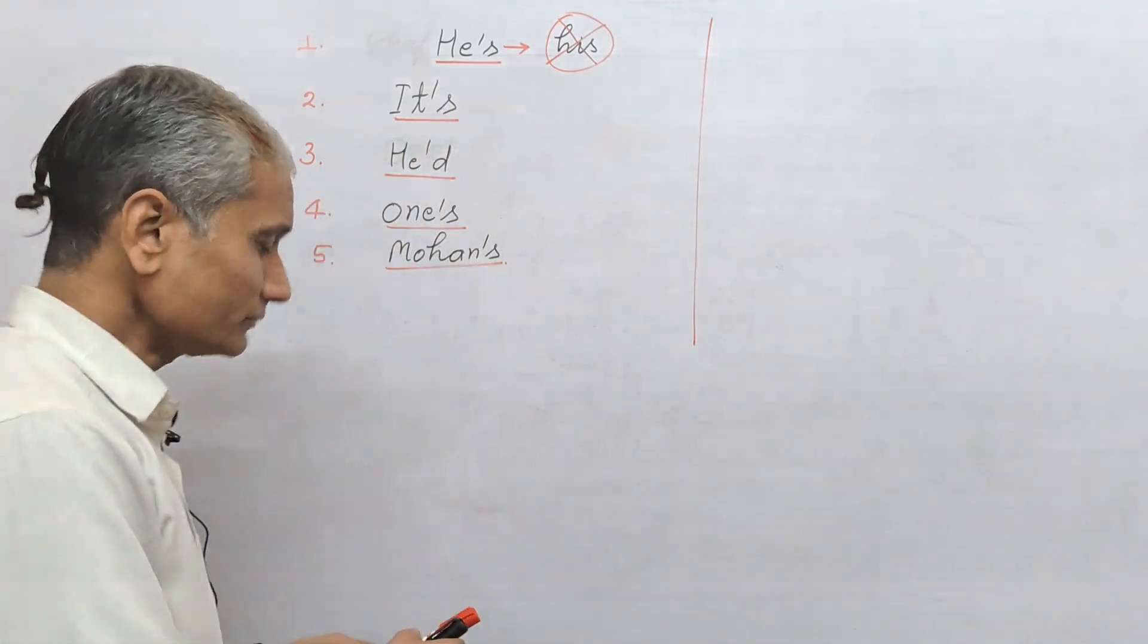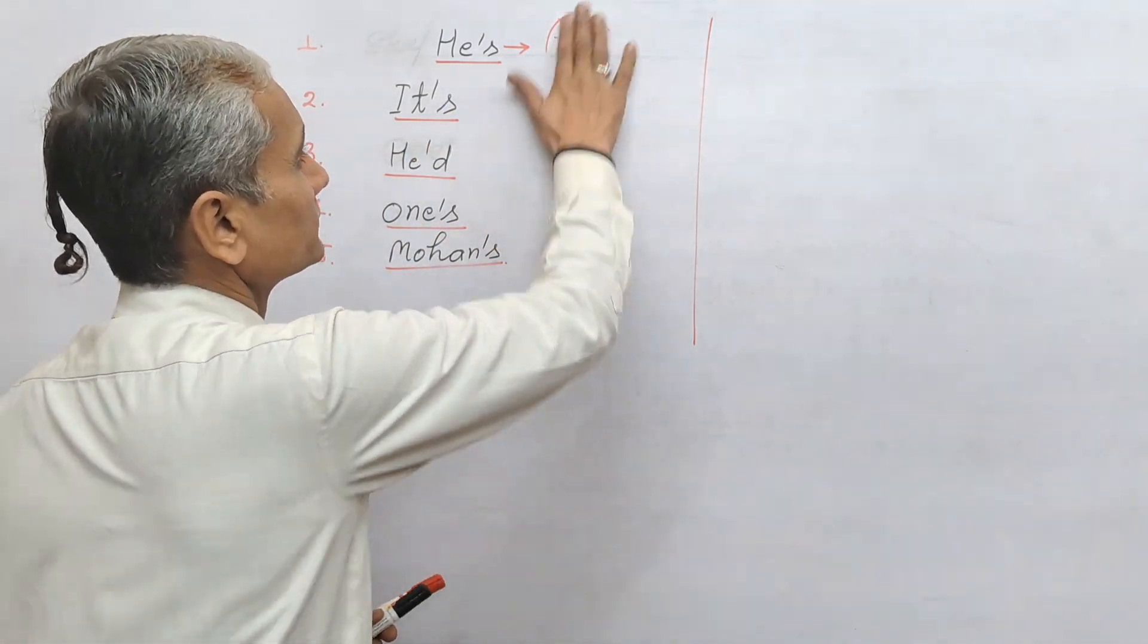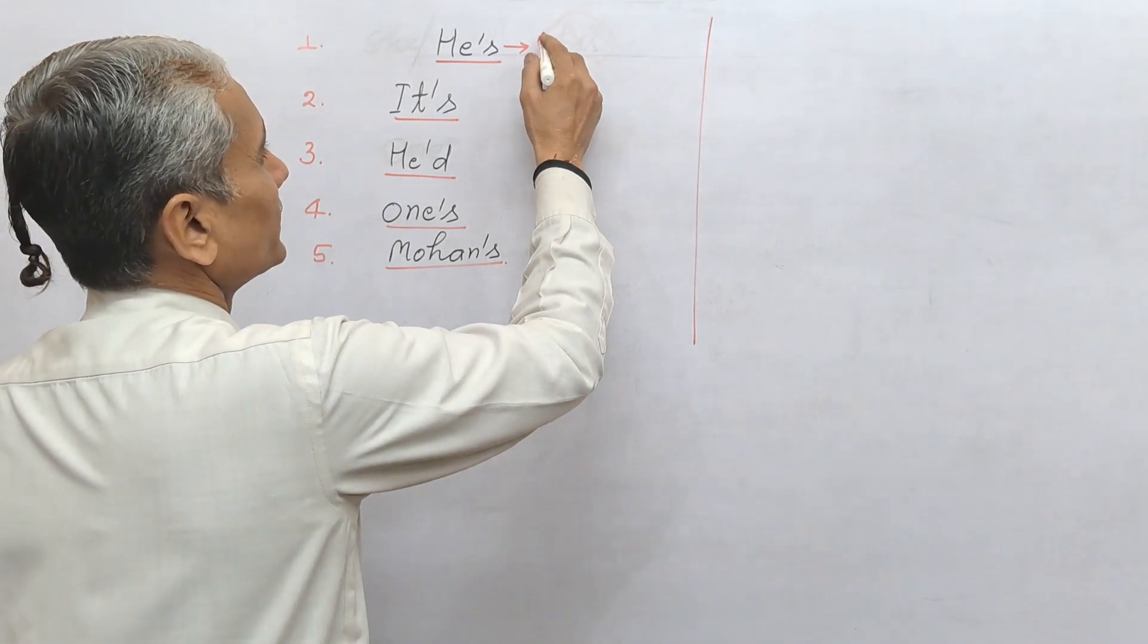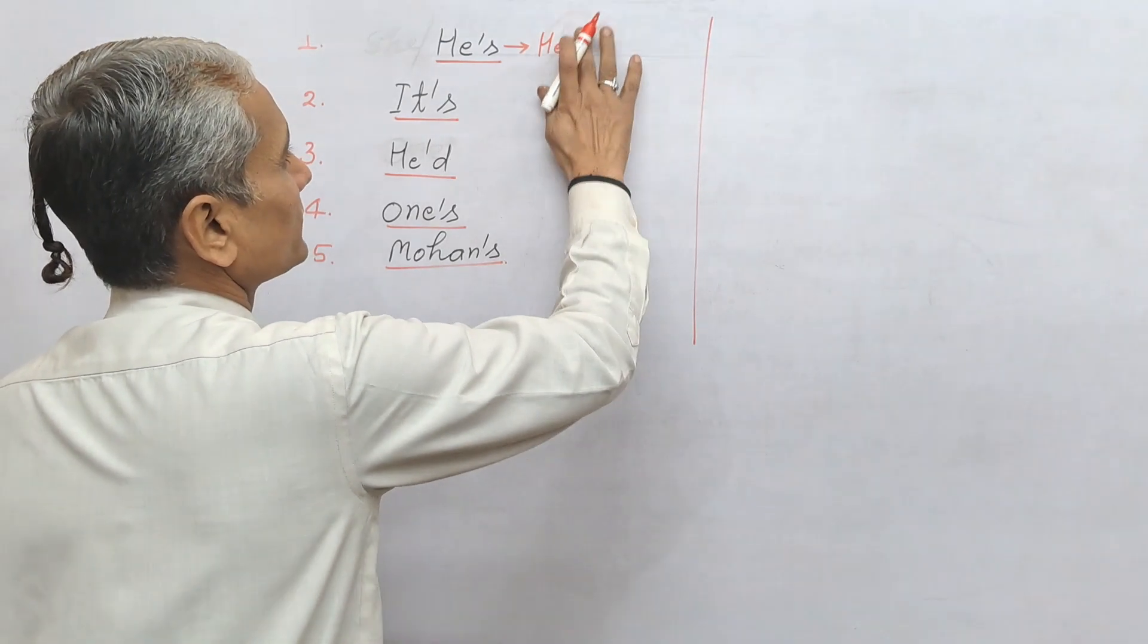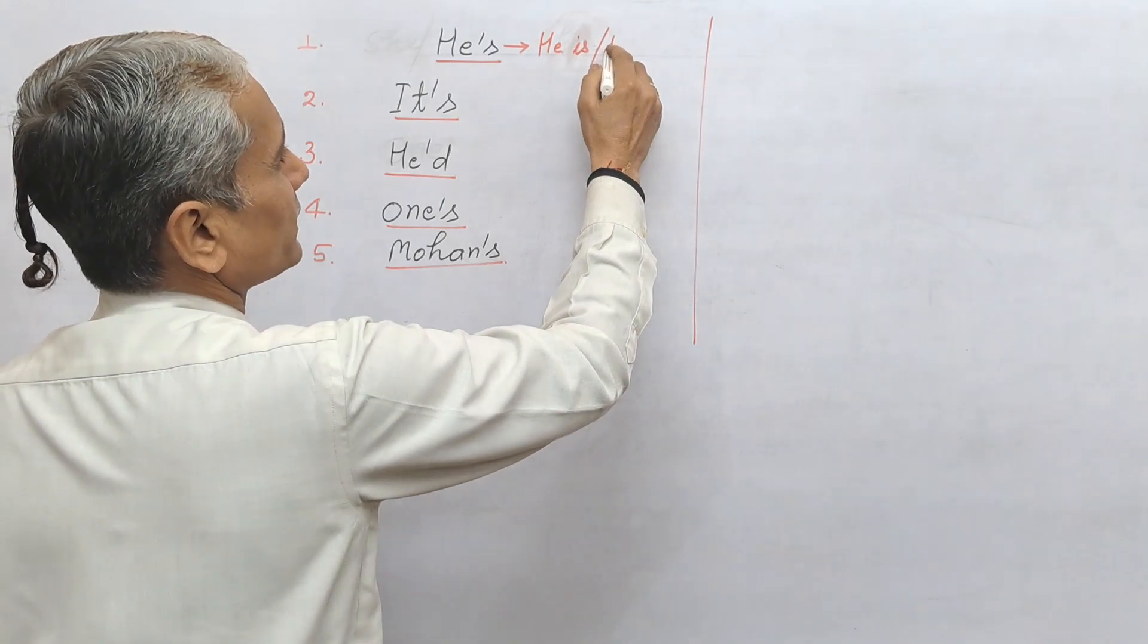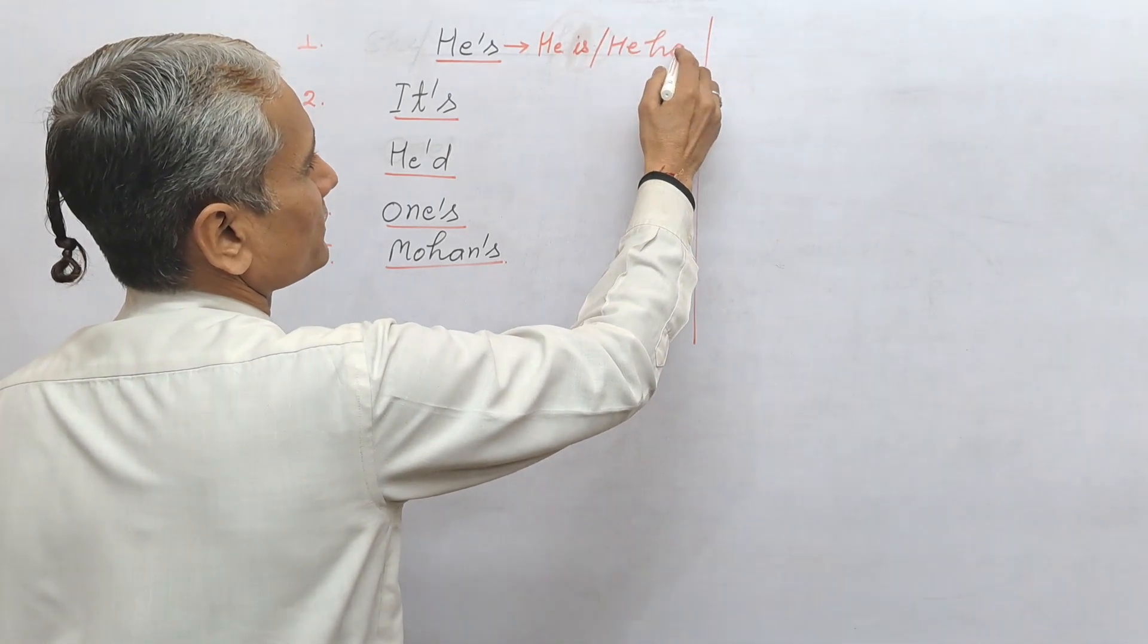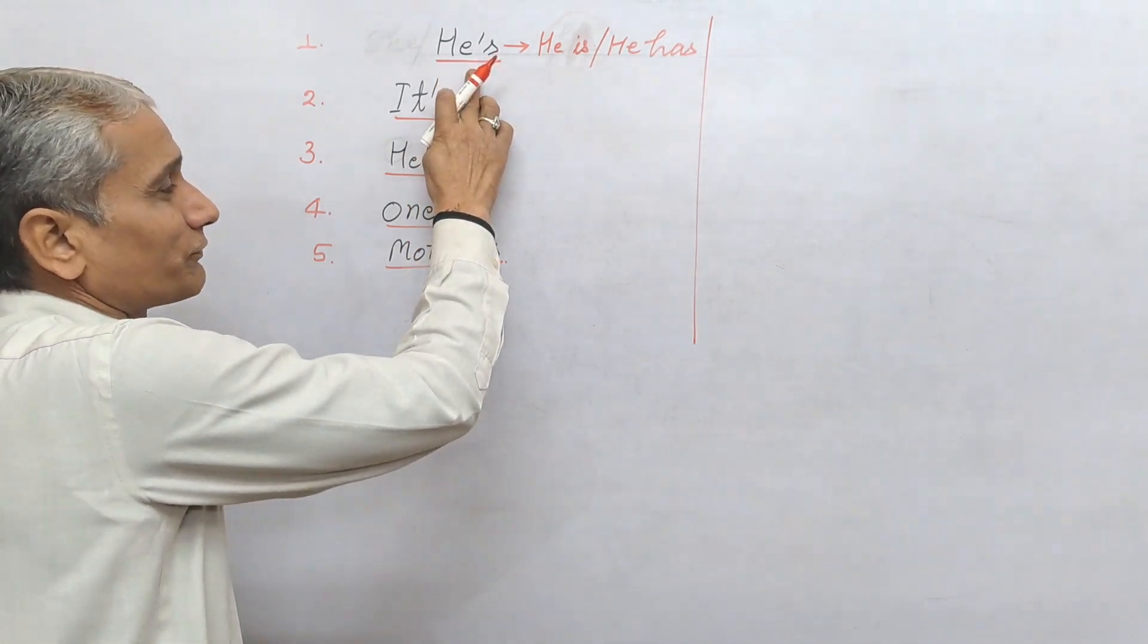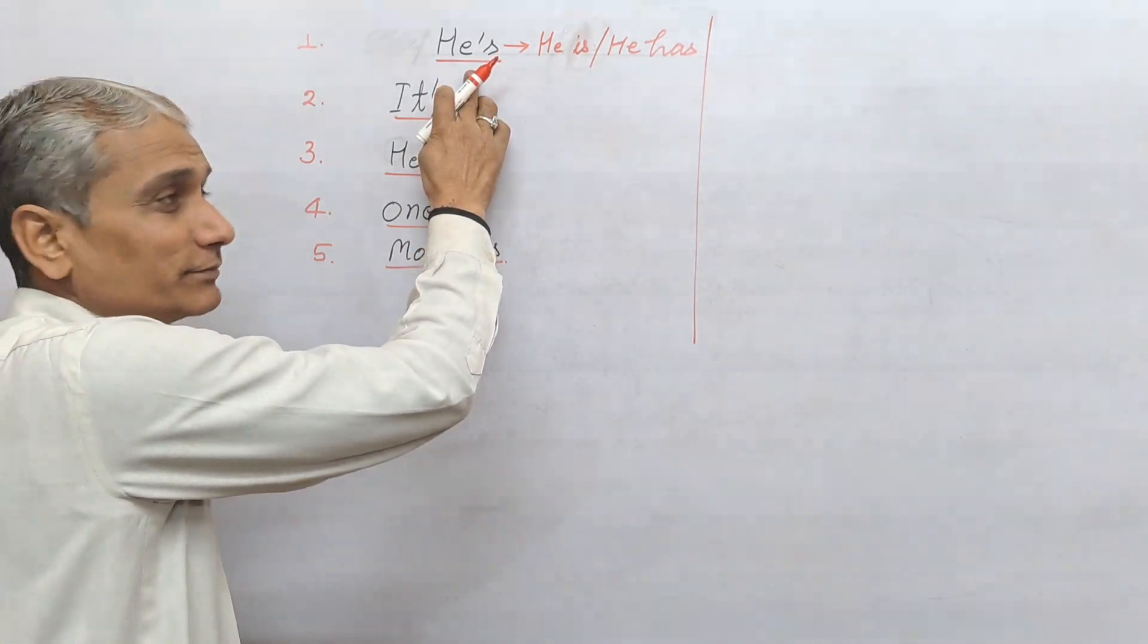See, he's means he is or he has. Clear? Because this apostrophe does not make he possessive.